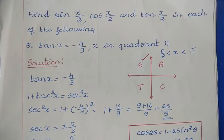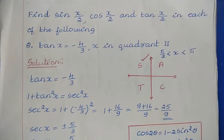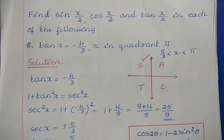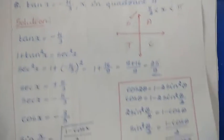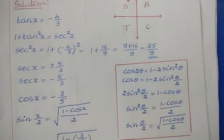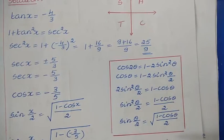First, we have question 8. Tan x is equal to minus 4 by 3, x in quadrant second. To find sin x/2 and cos x/2, we first need to find the value of cos x, because we can use those half-angle formulas.